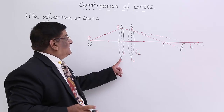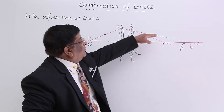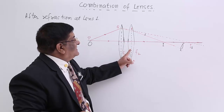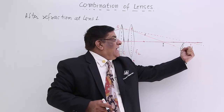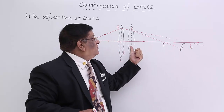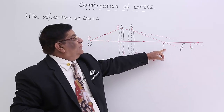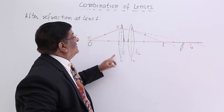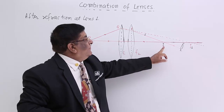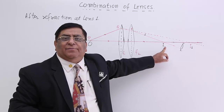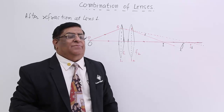For the very first lens only, this is the object and this was the image I1. For the second lens, it has moved this image to a new point. So for the second lens, I1 is the object which has been moved to the final image. And for the combination, this was the initial object and this was the final image.